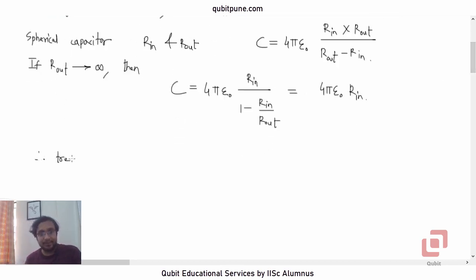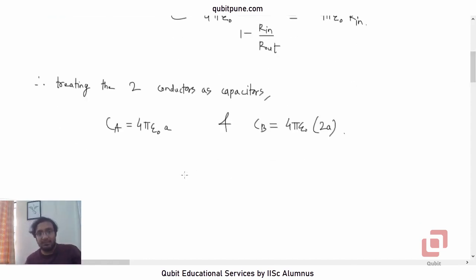So treating the two conductors as capacitors, we can say that the capacitance of A is 4π ε₀ A and capacitance of B will be 4π ε₀ (2A). So basically we can say that the capacitance is directly proportional to the radius: twice the radius, twice the capacitance. C is proportional to the radius.